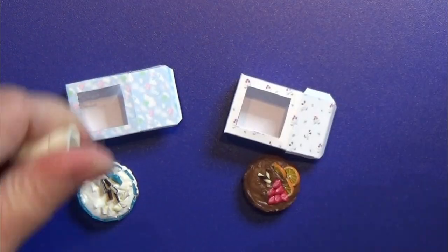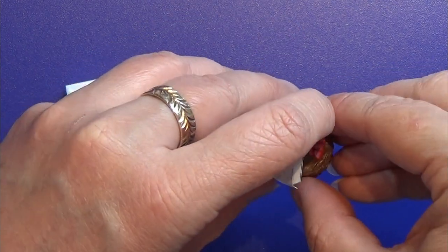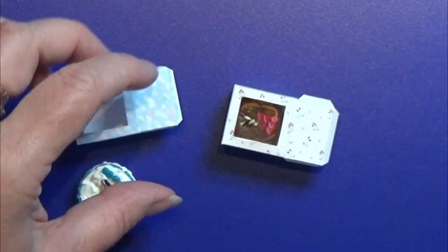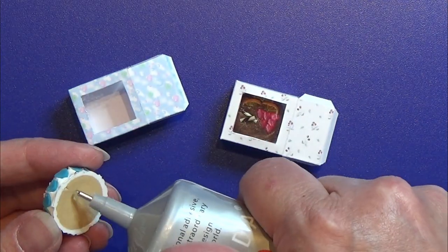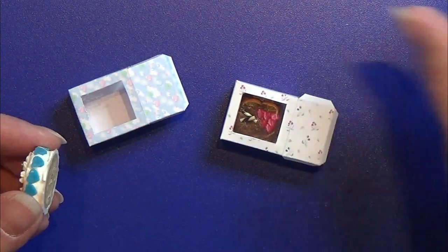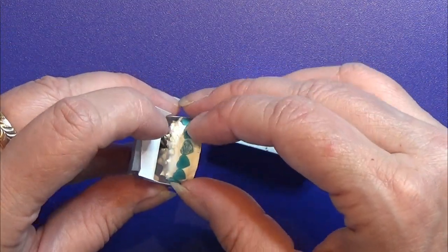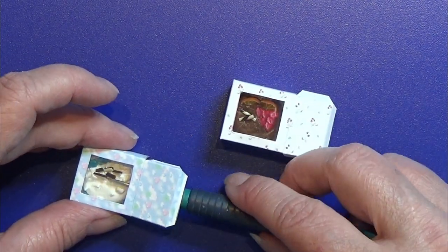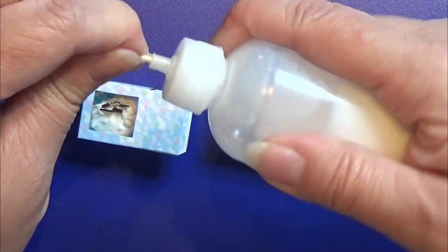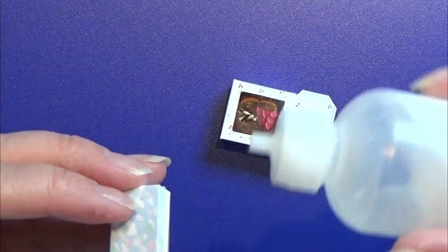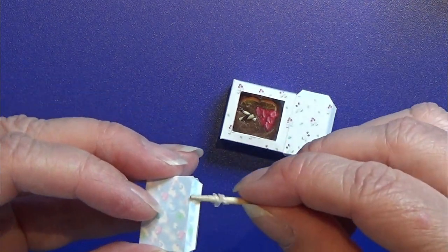Then I'm going to glue the cakes into this little box that I made. I will leave a link in the info box below for the print file for these small boxes. I glue down the last tab on these boxes so it's all shut, and now they're ready for use.